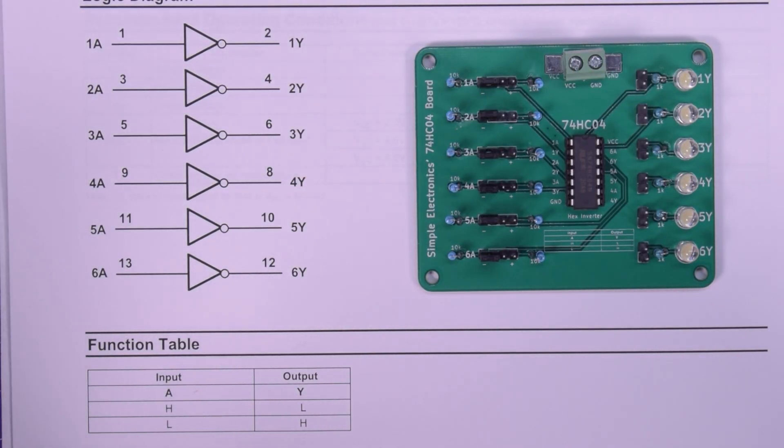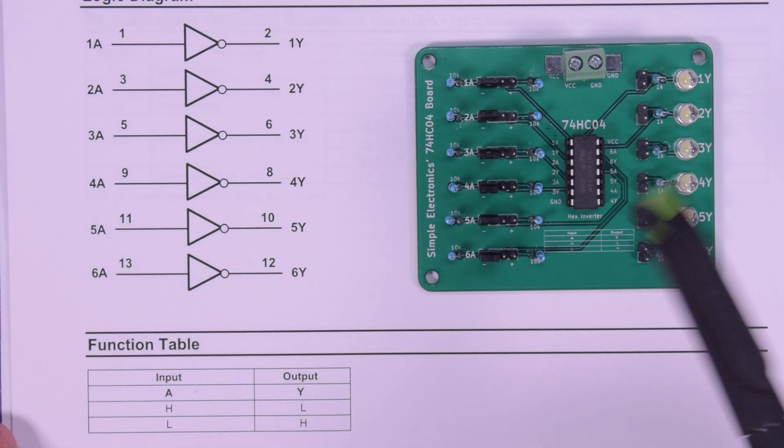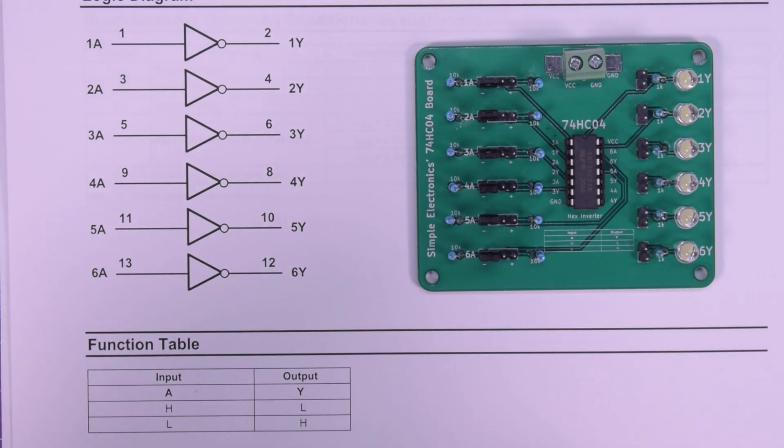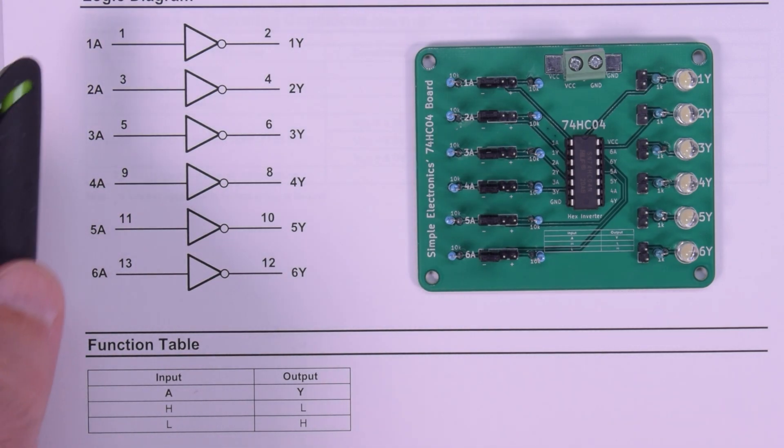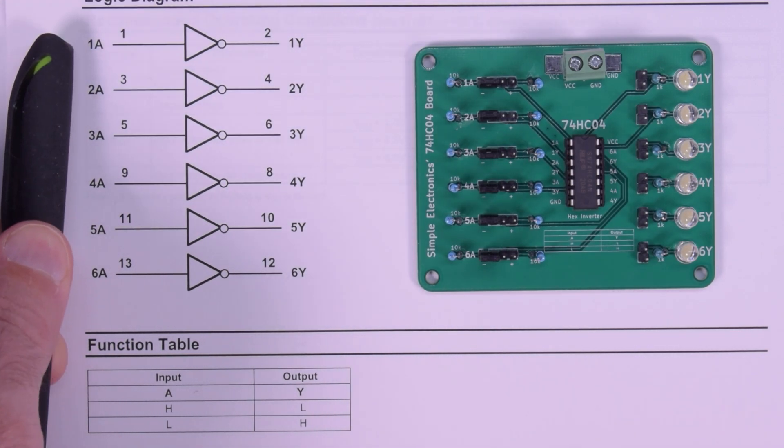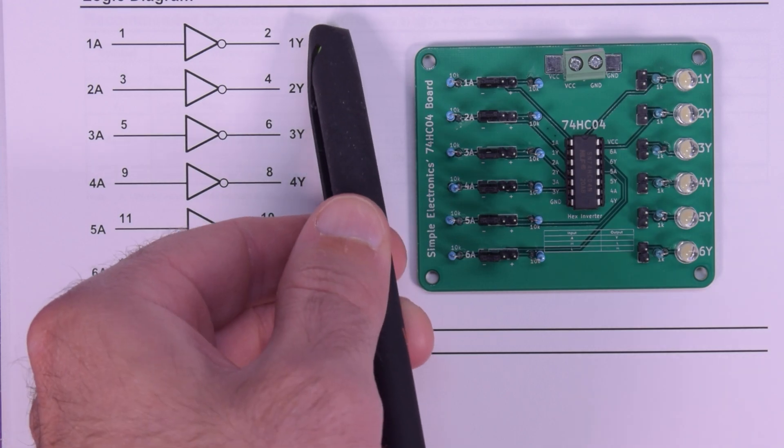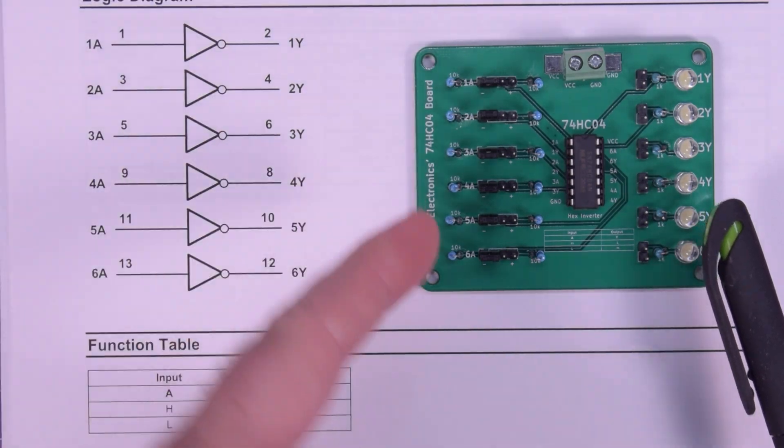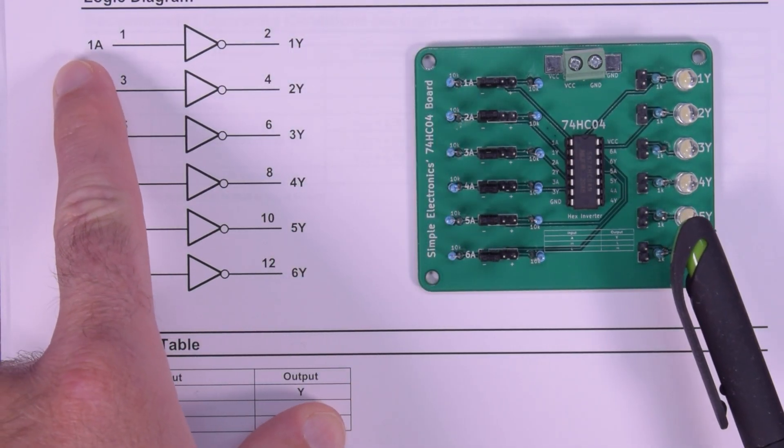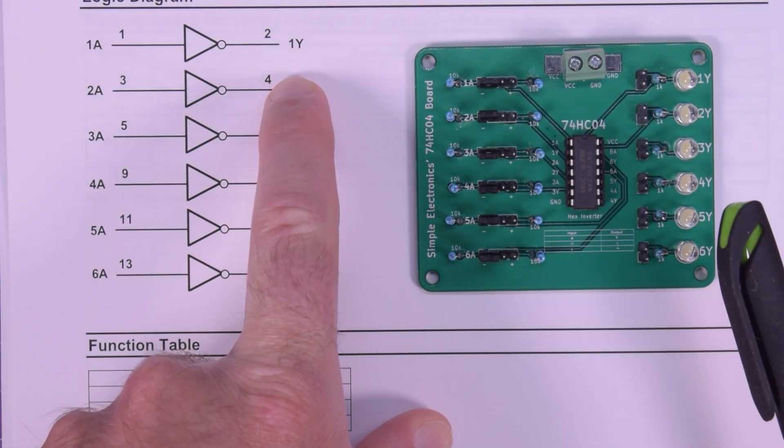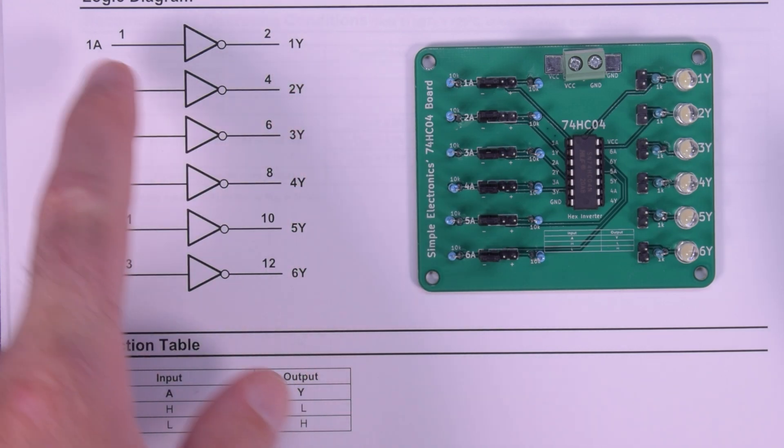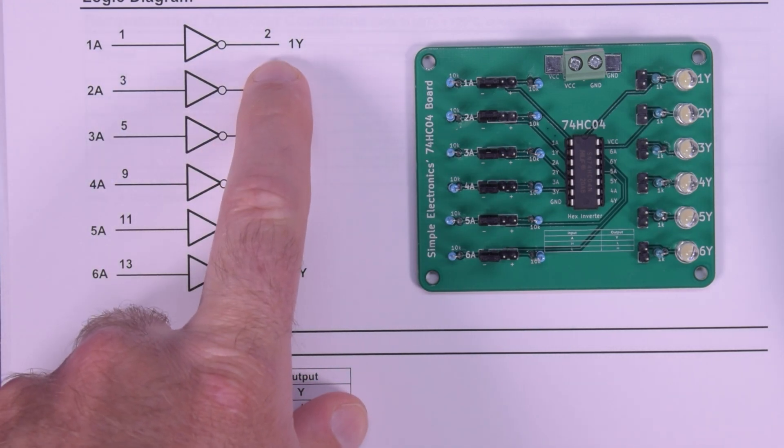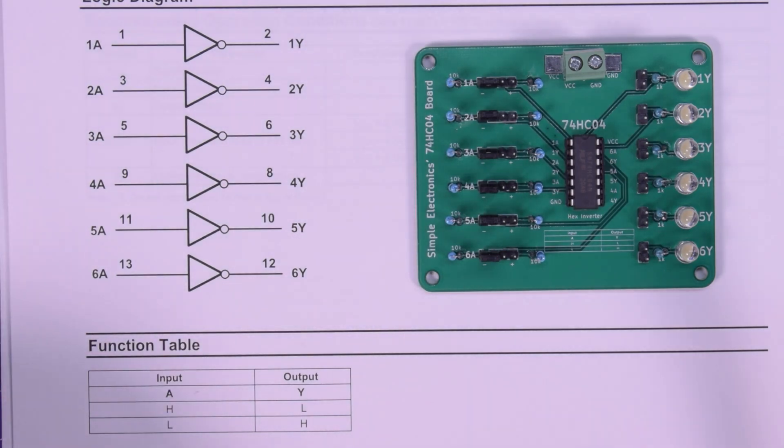The 74HC04 is actually one of the simpler logic chips in this series. It is simply a hex, as in there are six of them, inverter. So whatever you feed into A will be inverted at Y. For example, you put a high on 1A, well on 1Y you'll get a low. Put a low on 1A, on 1Y you get a high. It's that simple. It takes whatever the input is and flips it.